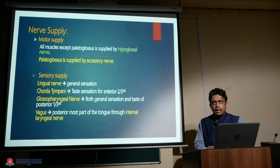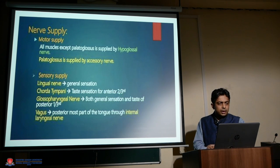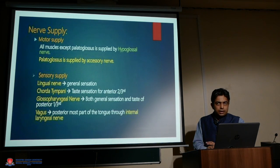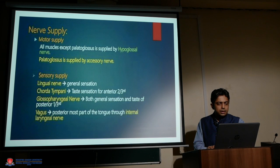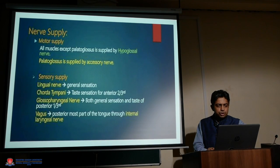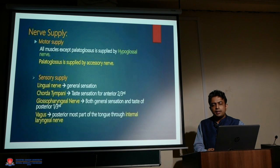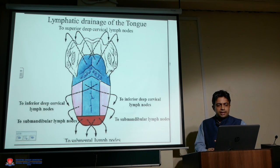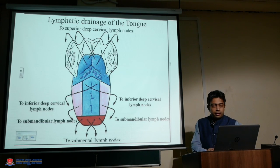Regarding nerve supply, all muscles of the tongue except palatoglossus are supplied by the hypoglossal nerve; palatoglossus is supplied by the accessory nerve. The lingual nerve is responsible for general sensation, while the chorda tympani carries taste from the anterior two-thirds. The glossopharyngeal nerve supplies both general and taste sensation to the posterior one-third, and the vagus supplies the posteriormost part via the internal laryngeal nerve.